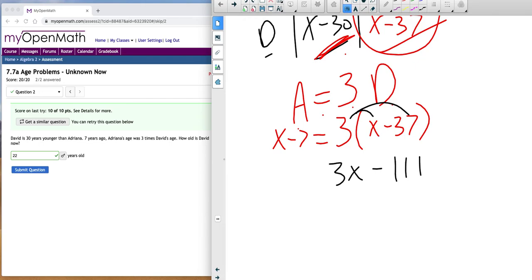So now I have x minus 7 equals 3x minus 111. Add 7 to both sides and I get x equals 3x minus 104. Subtract 3x from both sides.